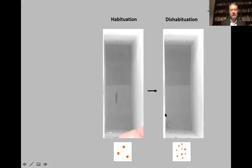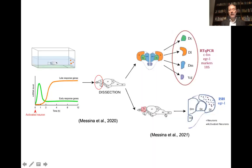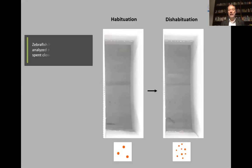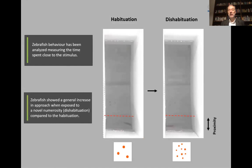And after that I can show you an example of the exploration that fish show during the dishabituation phase. That is the longer time they spent close to the novel stimulus with respect to the fish that were habituated to a particular number in this case.